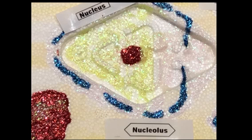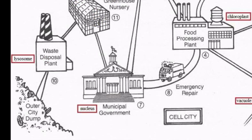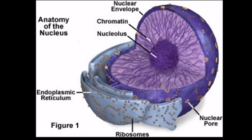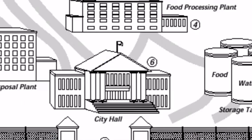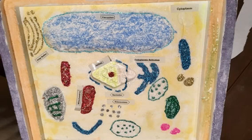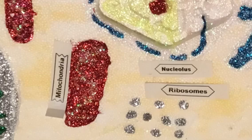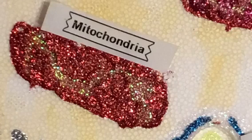The nucleolus acts like a mayor's office, controlling executive activity within the nucleus and containing the chromosomes and DNA of the cell. The nucleus functions as the equivalent of city hall. The mitochondria acts as the powerhouse of the cell, transforming the cell's food into energy, comparable to a coal power plant.